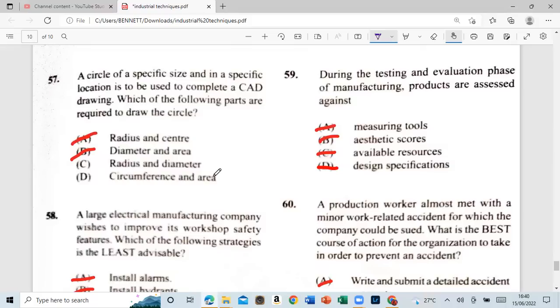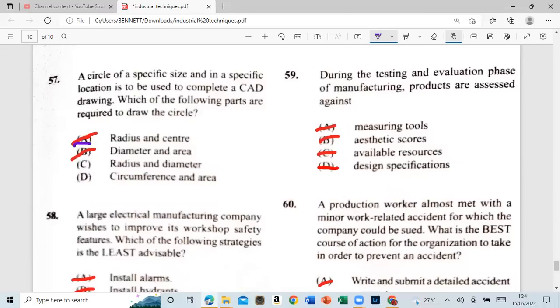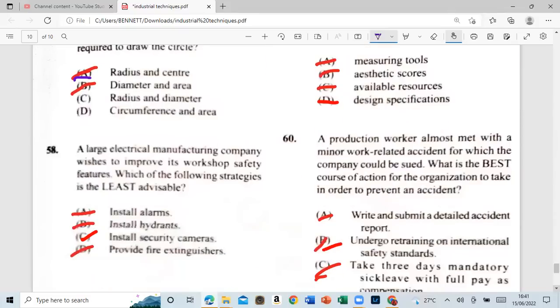57: a circle. A circle of a special. A specific size and in a specific location is to be used to complete a CD join. Which are the following parts are required to draw a circle? A: radius, the diameter area. C: radius and diameter. The circumference and area. And that is A: radius and the center. All right, guys, we have made it to the end. Yeah. We're going to serve to be a good another exam. I know.